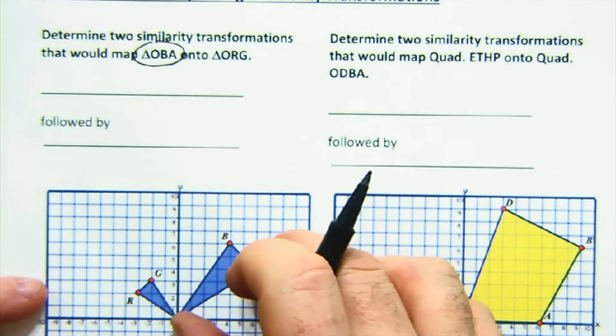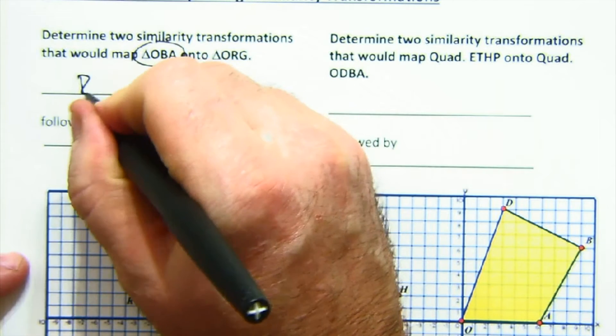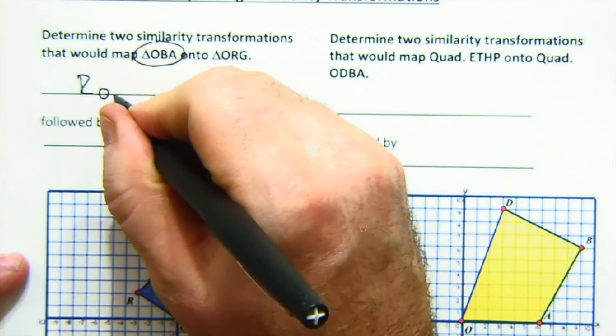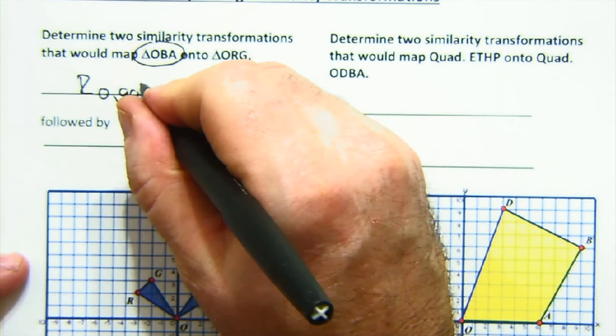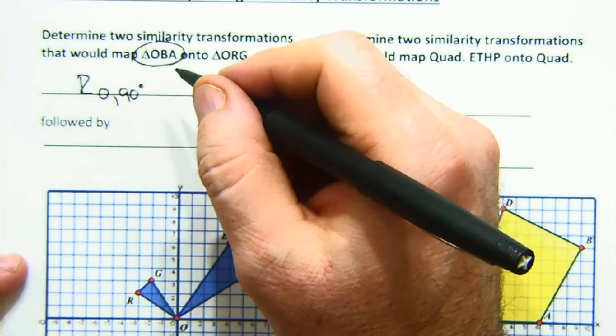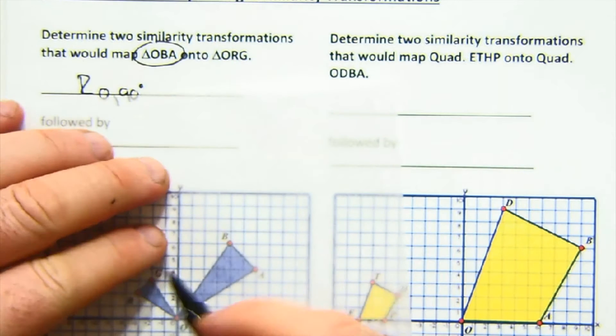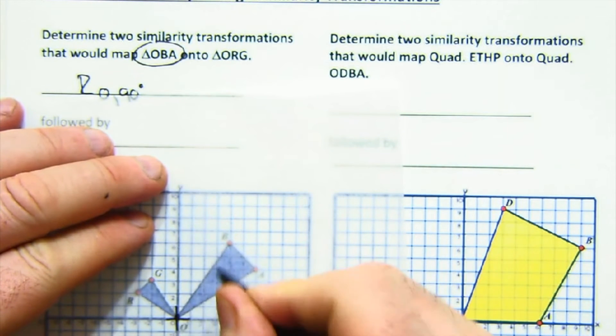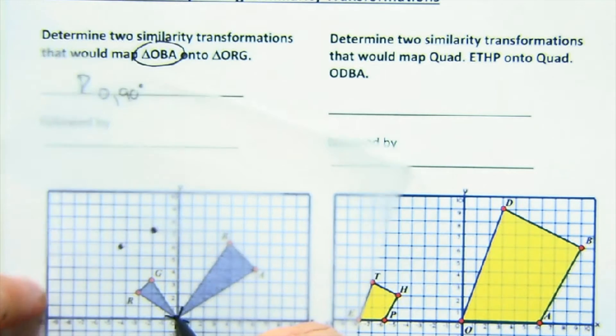But I think we're going to rotate it first. So I'm going to do a rotation about 90 degrees because that would be in this direction. And so in doing so, let me actually just grab a piece of patty paper.